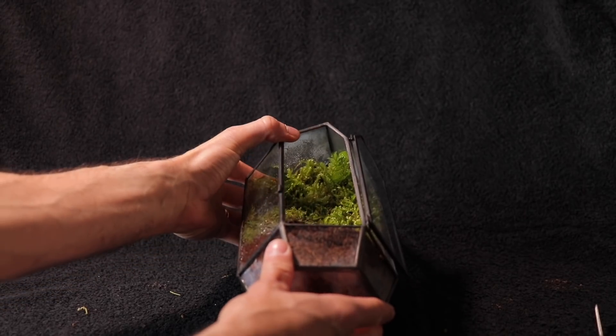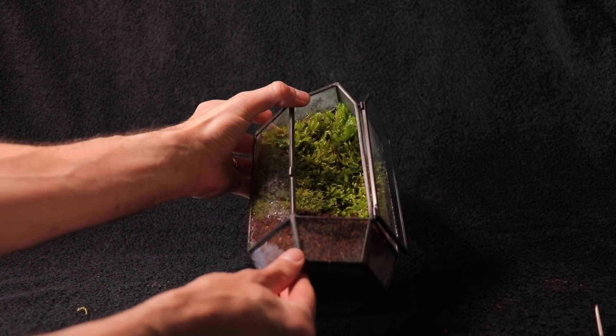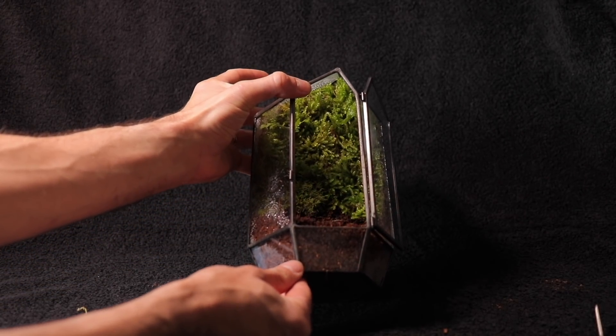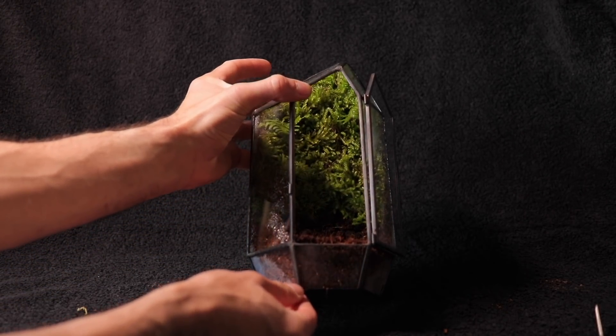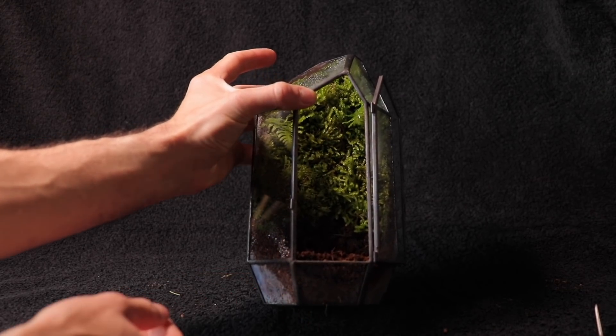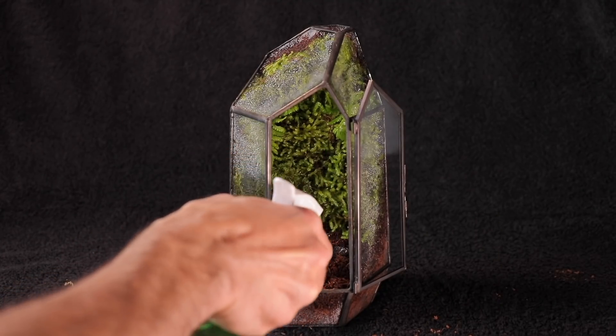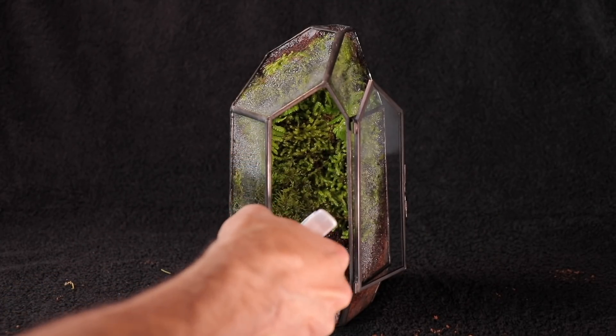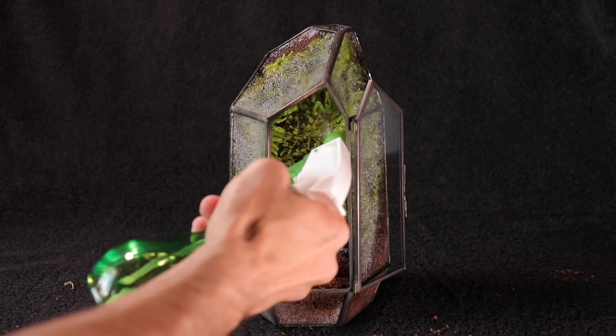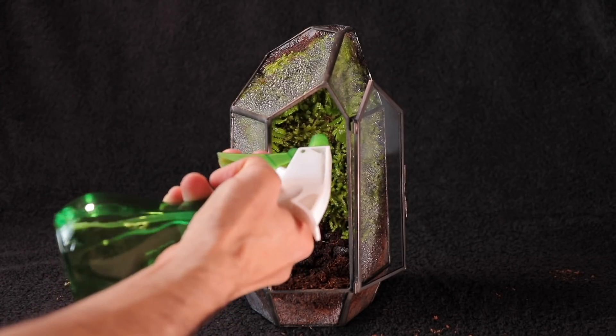Now was the delicate part. I gently lifted up the terrarium back to vertical position. Then I did one final misting of both moss and the sides of the glass. By misting the sides of the glass, the water runs straight down to the substrate to keep it moist, as opposed to the moisture just sitting on the top of the moss and not getting the substrate damp.